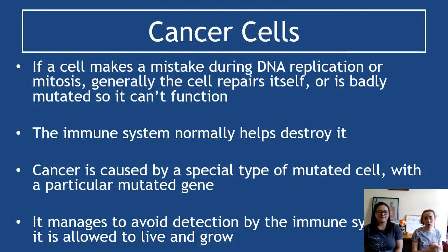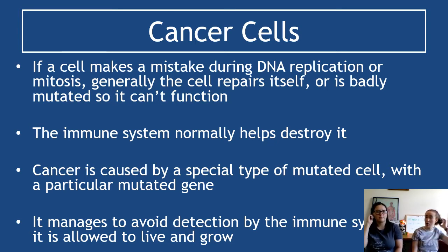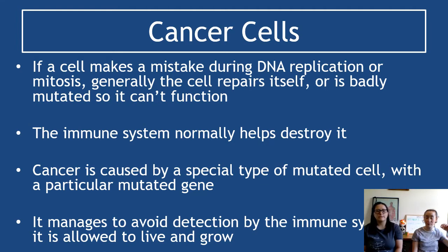If a cell makes a mistake during DNA replication or mitosis, generally the cell can't repair itself, or if it's badly mutated it can't function properly. When that happens, the immune system normally helps to destroy it. The issue with cancer is that it's caused by a special type of mutated cell with a particular mutated gene that means the immune system can't detect it — it seems so normal that your body can't tell there's an issue, so it doesn't destroy it.